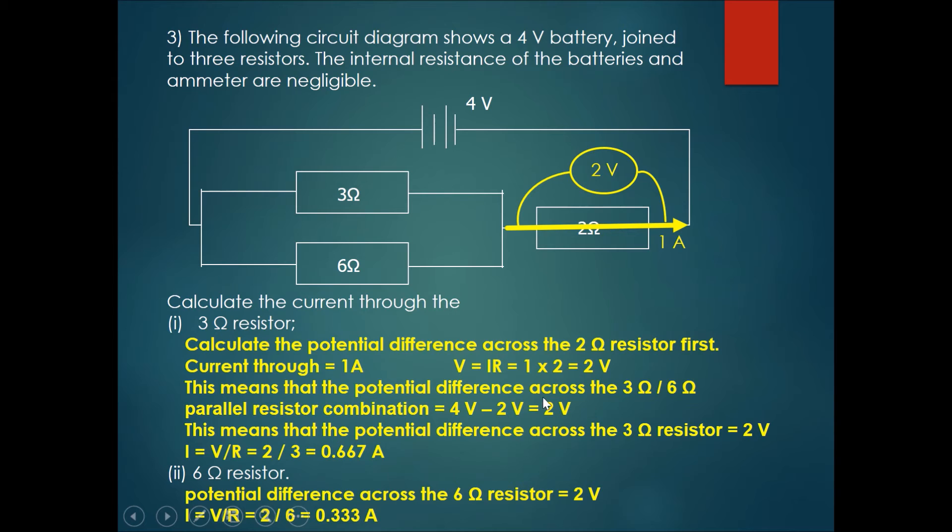This means that the potential difference across this combination over here is equals to 4 minus 2, giving you 2 volts over this segment because potential difference will be split up in series segments. Now that we have found the potential difference across this part...